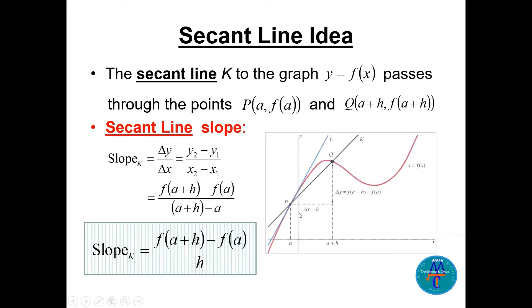Here we have the curve — the red one — the function y = f(x). Let's take two points on this curve: P = (a, f(a)) and Q = (a+h, f(a+h)), where h is the difference between these two x-values. We call this the secant line — it passes through two points on the curve. The slope will be change in y divided by change in x, which gives f(a+h) minus f(a), divided by (a+h) minus a. When we simplify the denominator we get h.